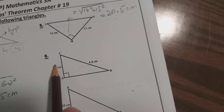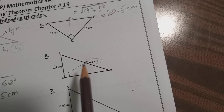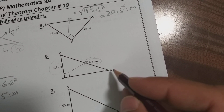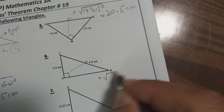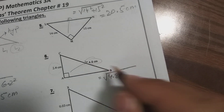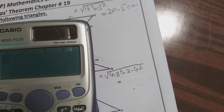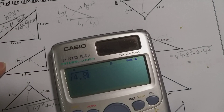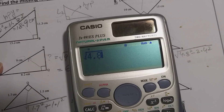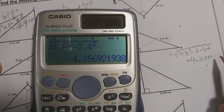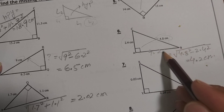Question number 6. We are given the longer side, which is the hypotenuse, and we are given one short side, and we need to find the missing short side. When we are missing the short side, we subtract. So it would be the square root of 4.8 squared minus 2.4 squared. Press equal and you find 4.156, so rounded it becomes 4.2 cm. This length is 4.2 cm.